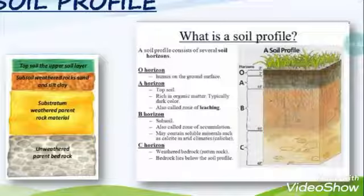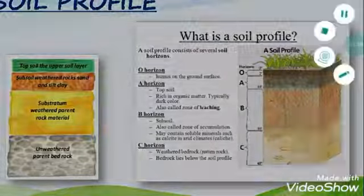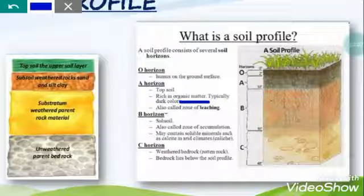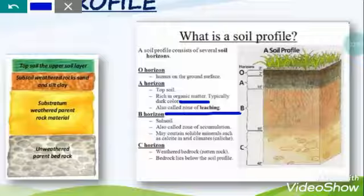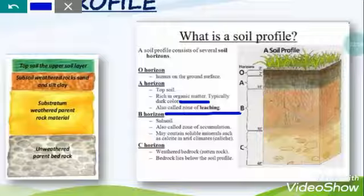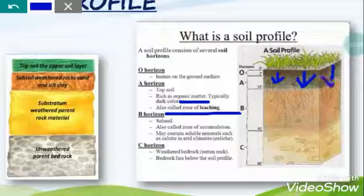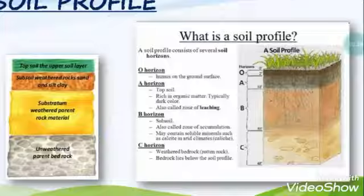Number two layer is the A horizon. It is the top part of the soil, and as this layer is also very much rich in organic matter, the color of the soil is dark. This layer is also known as the zone of leaching. Due to heavy rainfall, when the elements from the O layer start to come downwards, this process is known as leaching of soil.